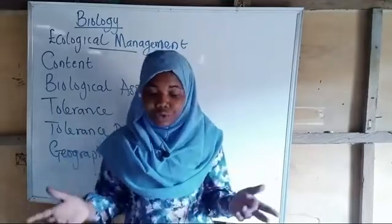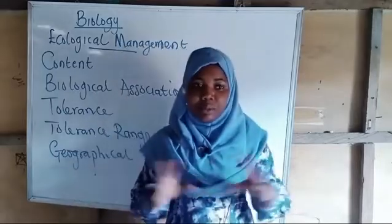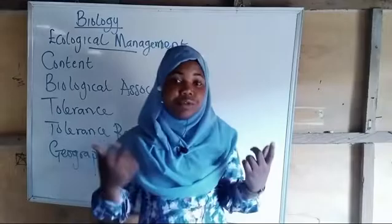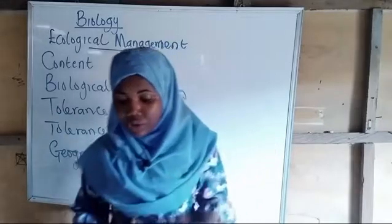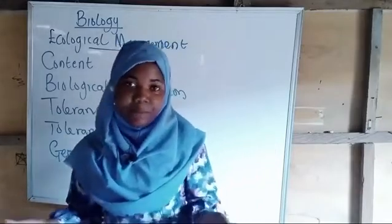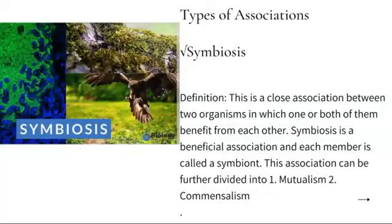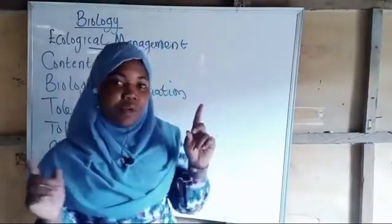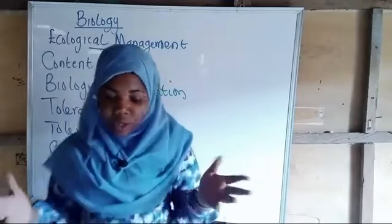There are different types of association in a particular habitat between varieties of organisms, which might be the same species or different species. The first type of association I'll be looking at is symbiosis. Symbiosis means a close relationship between organisms in which both might benefit from each other, or only one might benefit from the association.